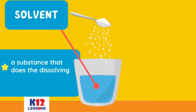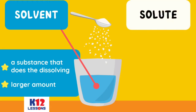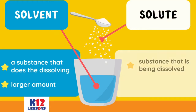A solvent is a substance that does the dissolving, or it is a substance used to dissolve a solute. It is present in a larger amount. A solute is the substance that is being dissolved; it is present in the smallest amount.